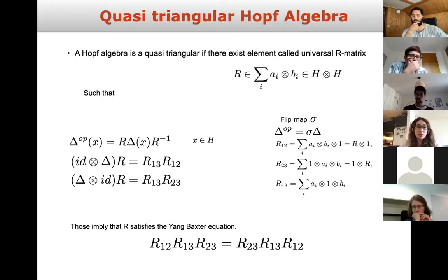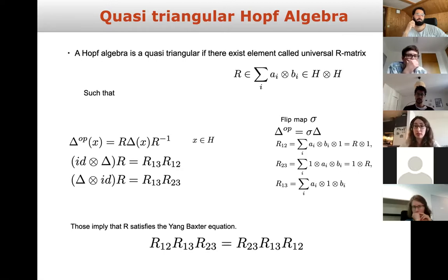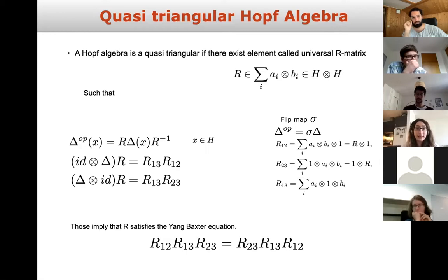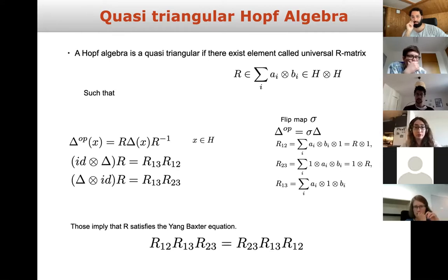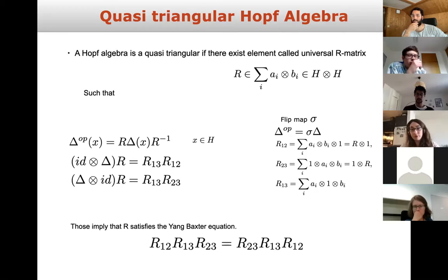Now I want to define a particular type of Hopf algebra called a quasi-triangular Hopf algebra. A Hopf algebra is quasi-triangular if there exists an element called the universal R-matrix satisfying three relations. Another important relation that these must satisfy is the Yang-Baxter equation at the bottom of the page — this is one of the very main relations in integrability. So if you work in integrability, this is where our research connects.